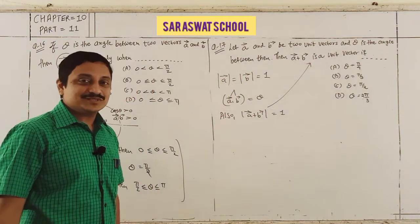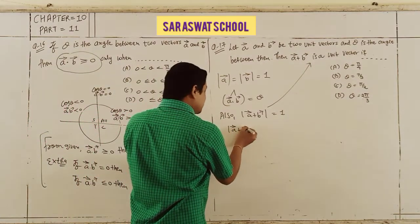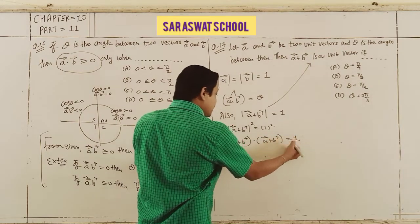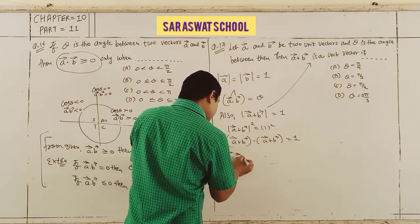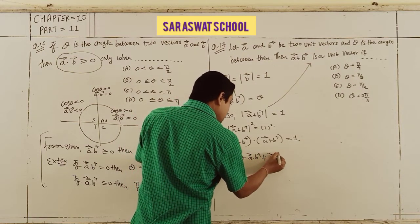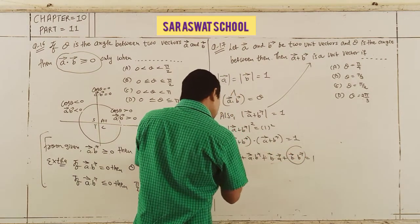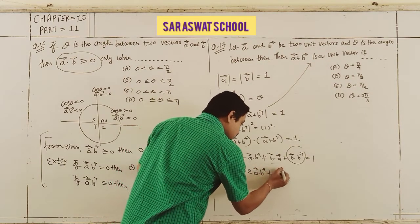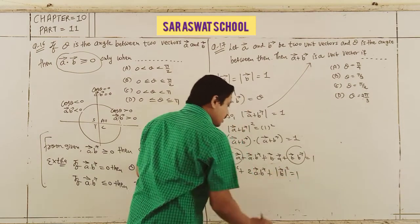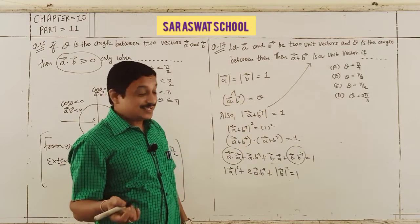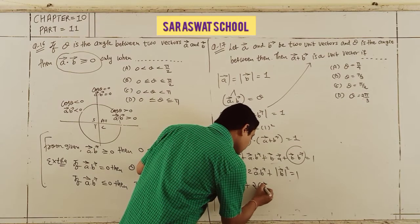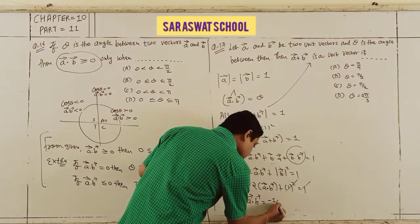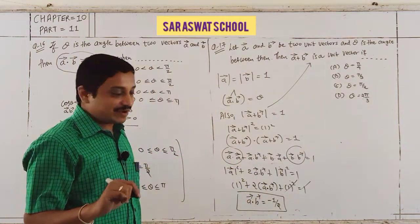So |A + B|² = 1. Expanding: A·A + 2(A·B) + B·B = 1. Since |A|² = 1 and |B|² = 1: 1 + 2(A·B) + 1 = 1, giving 2(A·B) = −1, so A·B = −1/2.